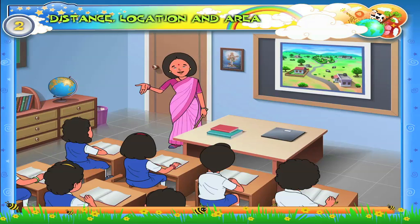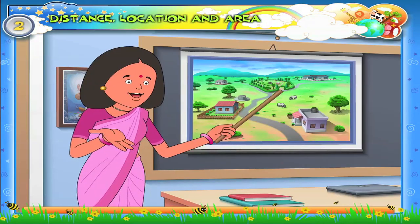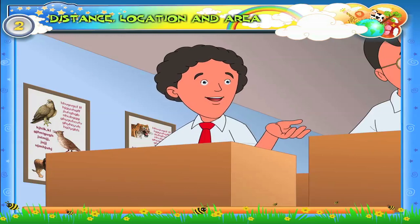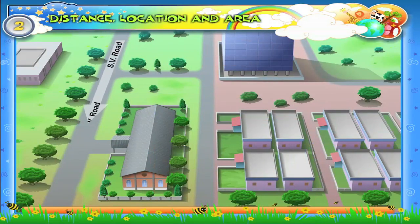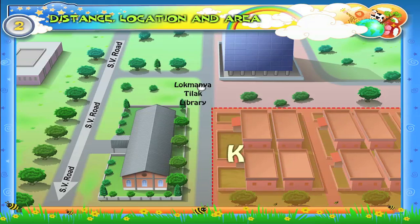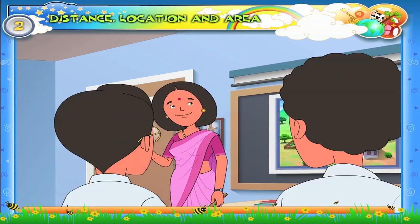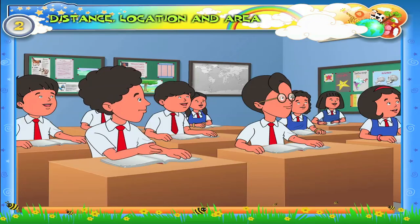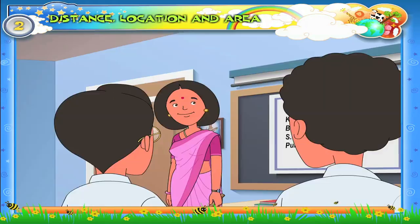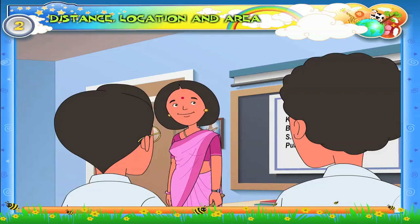Now let us try to understand the concept of location. Arun, where do you live? Teacher, I live in Pune. How can one reach your house? First, one has to go to SV Road. On SV Road, he can see Lokmanya Tilak Library. Behind the library, he can find Kala Vasanth Society. You live in Kala Vasanth Society — what is the number of your house? My house number is 102. Arun has given a clear description of the way to locate his house.